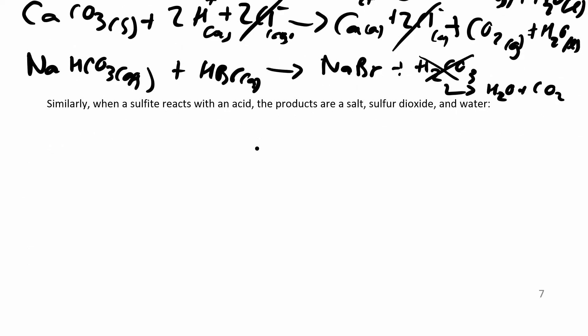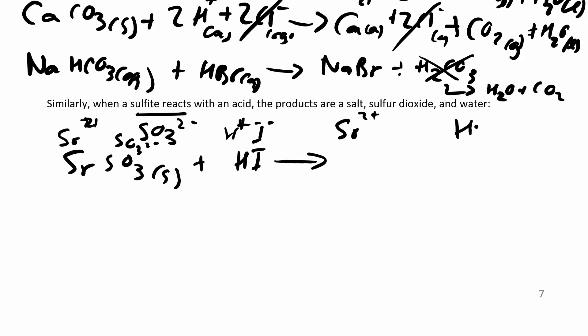Very similar to what happens with the carbonate and the bicarbonates. Same thing happens with sulfate, sulfite ion, right? That's SO3 2 minus. So if you had something like strontium sulfite reacting with HI. Let's again look at this, break this one down a little bit more than I did for the bicarbonate. SO3 2 minus. I'm just splitting it up into ions and then I'm going to write my reaction over here.